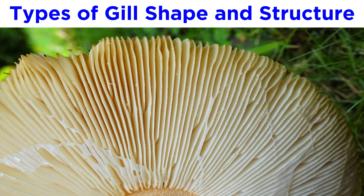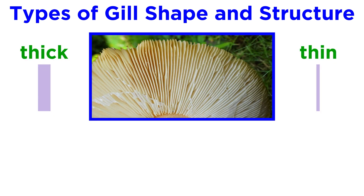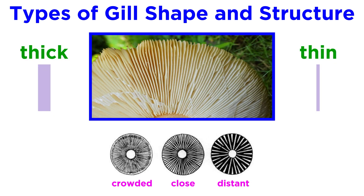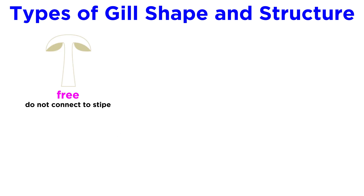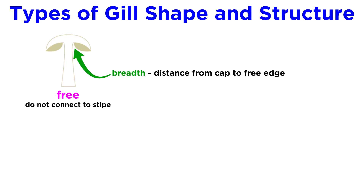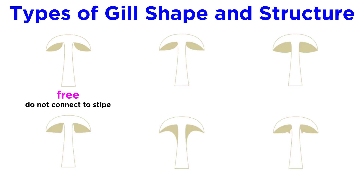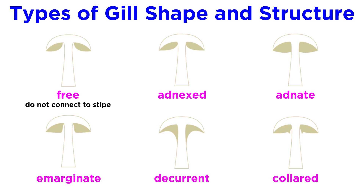We have already discussed the gill hymenophore in Amanita jacksonii and Amanita muscaria. Among the many other gilled mushrooms, the shape and structure of gills can vary. These gills can be thick or thin, and some gills may be distant or crowded. Gills do not always connect to the stipe — we call these free gills. The term breadth is the distance from the cap to the free edge of the gill. If the gills are connected to the stipe, they may have a structure that is adnexed, adnate, imarginate, decurrent, or collared.